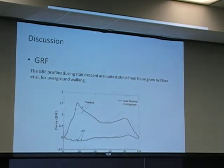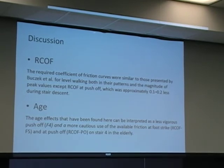Discussion: The GRF profiles during stair descent are quite distinct from those given by Chao et al. for overground walking. You can see the first vertical peak force is higher and the second vertical peak force is lower. The RCOF is comparable to that of overground walking, except the RCOF at push-off, which was 0.1 to 0.2 less during stair descent. The age effects that have been found can be interpreted as less vigorous push-off and more cautious use of available friction.